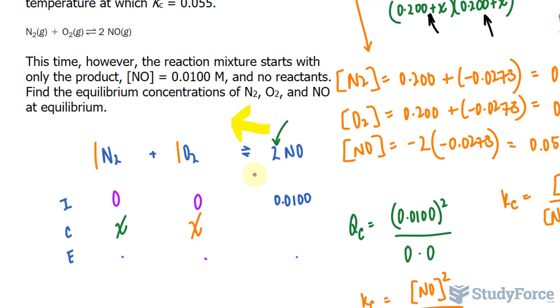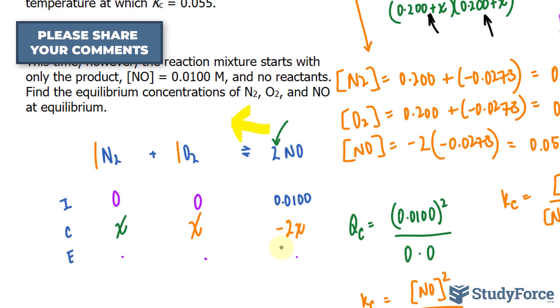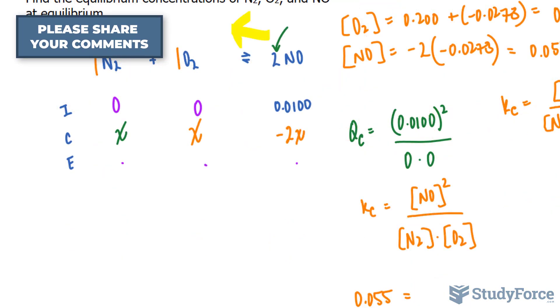This means that this can also be represented as X. And there's a 1 to 2 ratio here. So we will write down 2X, but since we're comparing reactants to products, it should be negative 2X. Now, to find E, we add up I and C.